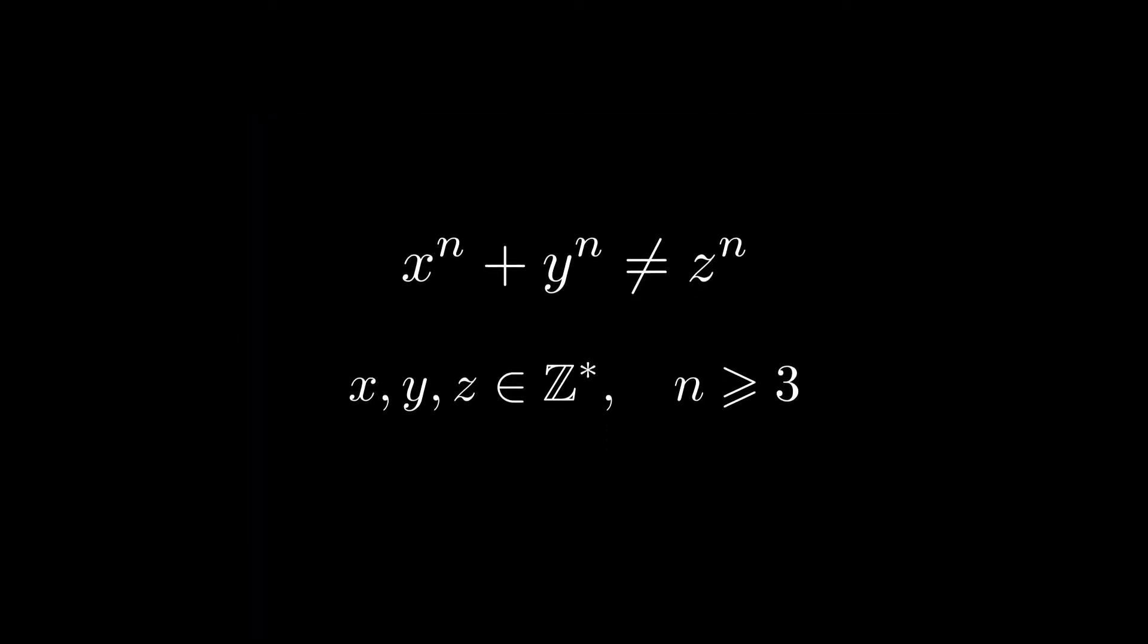But what would happen if we modified the ground on which it stands? For instance, rather than asking about the non-zero integers, we could think about what happens if we allow them to cycle modulo a prime number. Would Fermat's conjecture stand its ground, or could we break it?